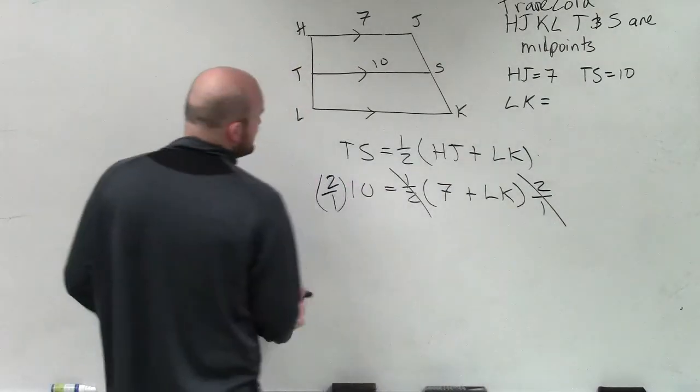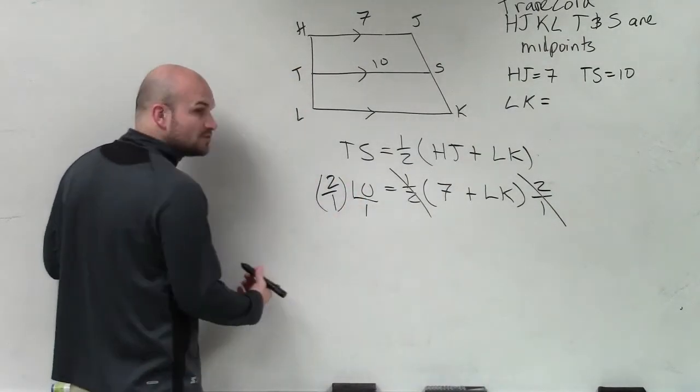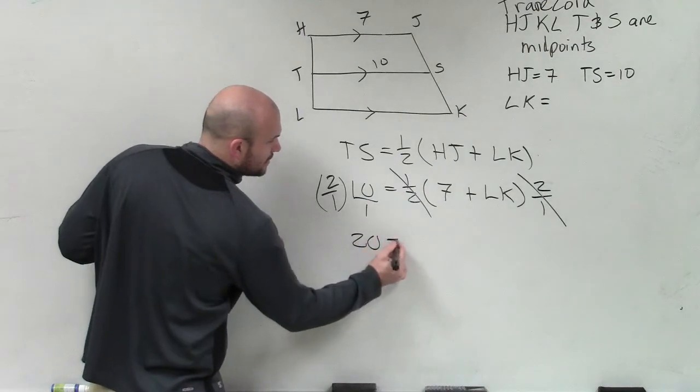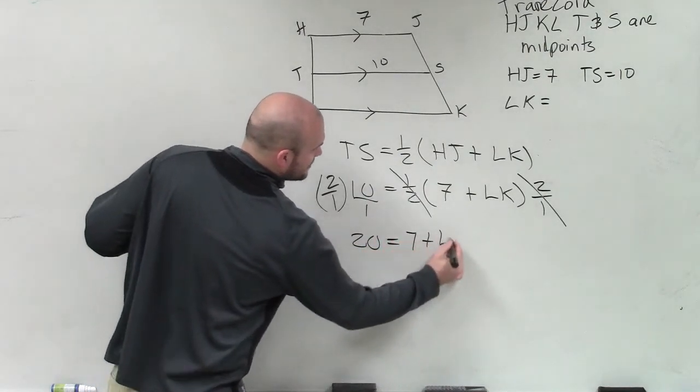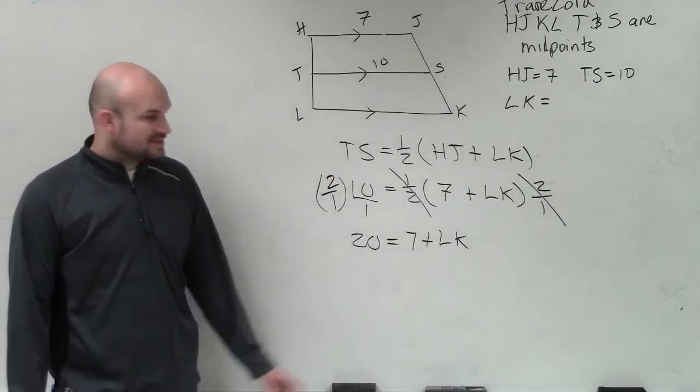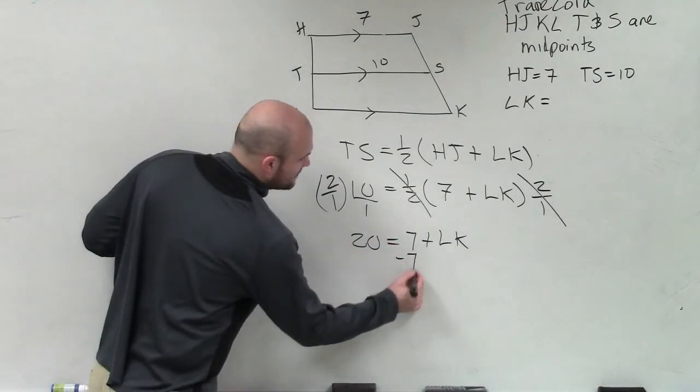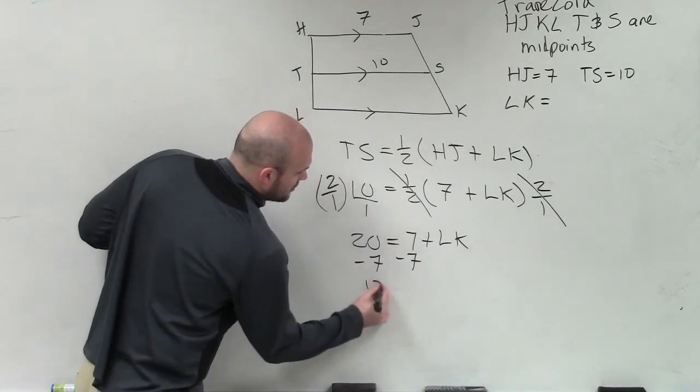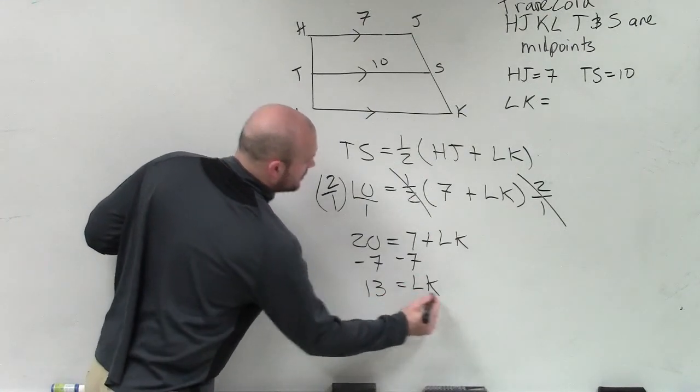Well, 2 over 1 times 10, you can write that as a fraction if you want to. That becomes 20 over 1, which is just 20, equals 7 plus LK. I don't need the parentheses anymore, because I'm just adding these two. And now I'll subtract 7. 13 equals LK.